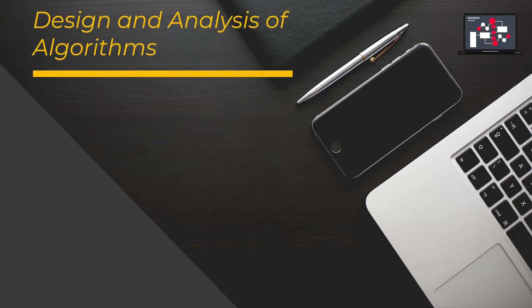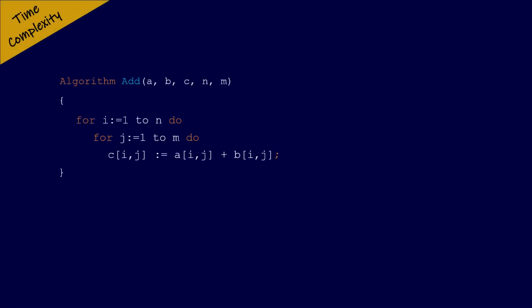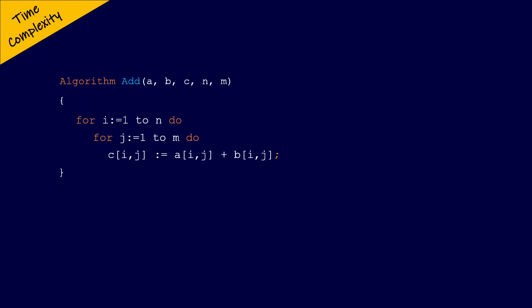In this video, we will look at how to compute the time complexity of two nested for loops. We will focus on the number of times the primitive operations are performed by an algorithm to compute the time complexity. Let us look at the pseudocode of this algorithm 'add' and compute its time complexity.